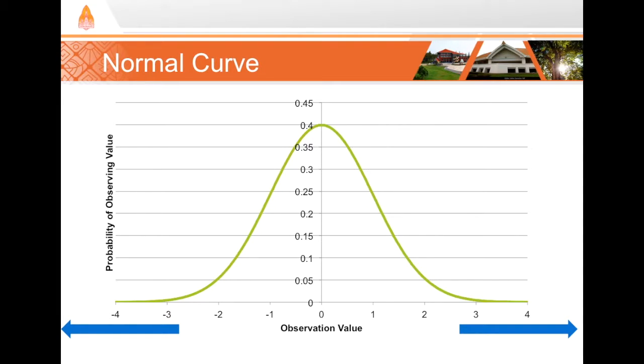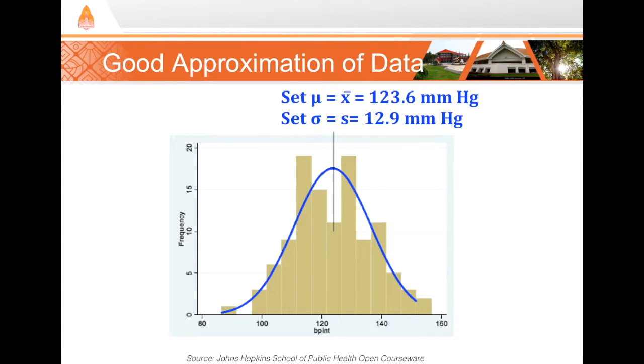Now, some data is approximated well by the normal curve. If we measure blood pressure within a sample of 113 men and perform descriptive statistics, we might find that the sample mean is 123.6 millimeters mercury and that the sample standard deviation is 12.9 millimeters mercury. If we superimpose the normal curve using those values measured in the sample as the assumed population mean and standard deviation, we would see this. Here we can see that the normal curve does closely follow what we see in the histogram.